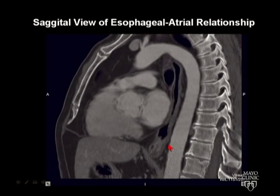The main predictor for fistula or esophageal ulceration is the amount of fat between the esophagus and the left atrium. You can see that distance on CT or MR, and roughly with ultrasound. In this particular patient, there's really no interface — the left atrium is right adjacent to the esophagus over a fairly large portion.